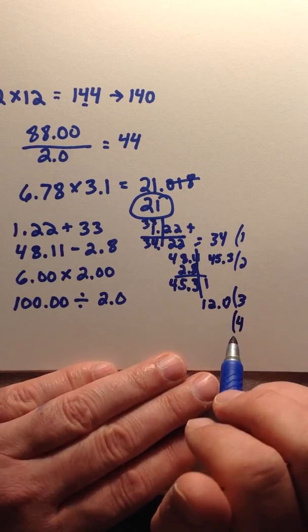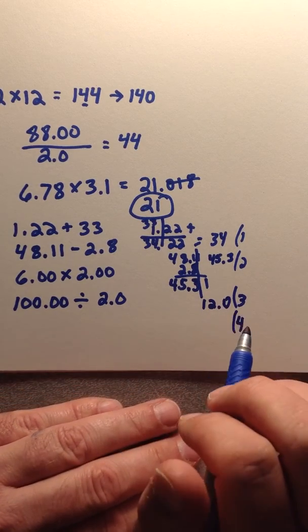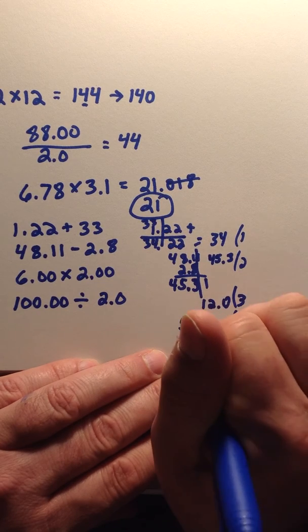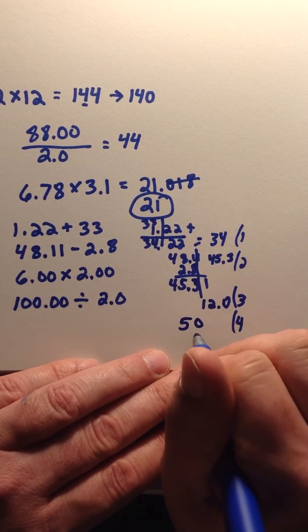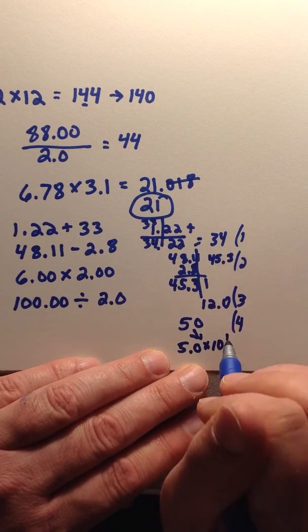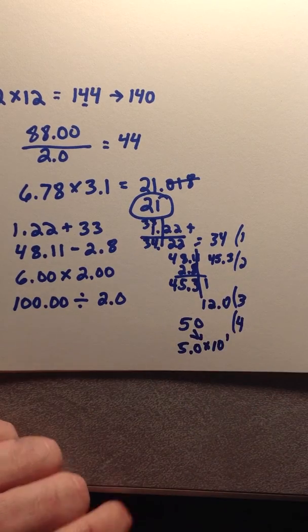And the last one, number 4. 2 divided by 100 is obviously 50. Problem is 50 is just one sig fig. So we're going to turn that into 5.0 times 10 to the 1st to make that 50 with two sig figs.